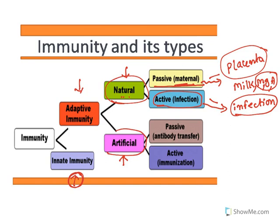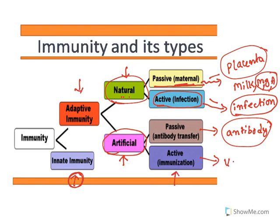Artificially acquired immunity can be passive — antibodies are developed from highly infected people and directly given to human beings. Active artificial immunity involves stimulating the human immune system with immunization. These are nothing but vaccines. So immunity is classified as adaptive and innate; adaptive is further divided into natural and artificial.